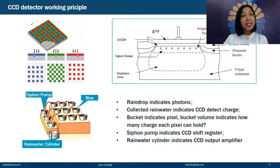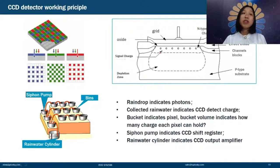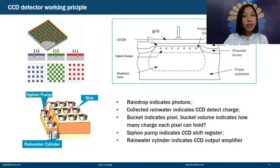Next, we introduce the CCD detector. The detector determines the most significant cost of a spectrometer and is a very important component. When a photon strikes the detector, it generates ionization and charge accumulation. We will use a vivid analogy to explain the detector's working principle.